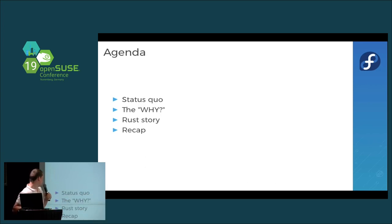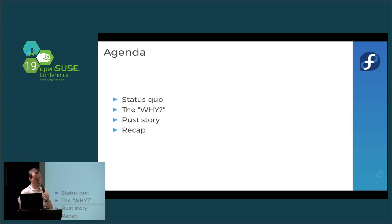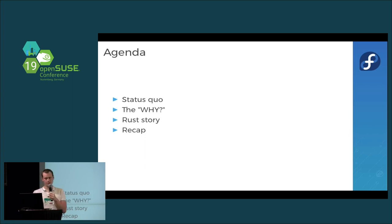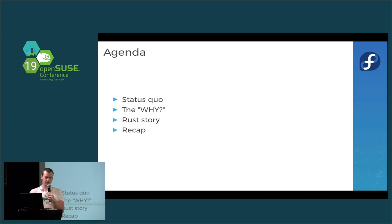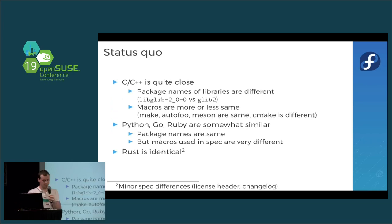I'm a contributor for openSUSE, mostly for Rust stuff, for a few months, and also a contributor to many upstream projects, randomly pushing patches everywhere. For today we'll look at the current status of distribution differences in RPM packaging, why we care about that, how it happened with Rust, and a recap of what to do and how to do it.